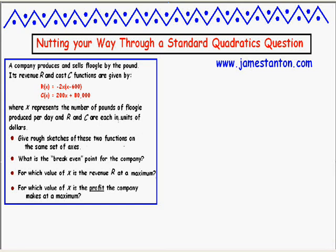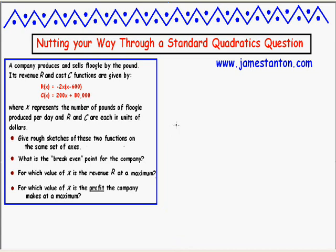So the idea of these questions, at least in the course I was working with, was to put this on the calculator section of the exam. Kids are meant to sketch these on their calculators, then use the function menus to find intersection points. They deliberately choose awkward numbers, because part of the challenge is finding the right screen size to properly sketch these things. And you can probably tell by the tone of my voice, I really have a bias against that type of thinking.